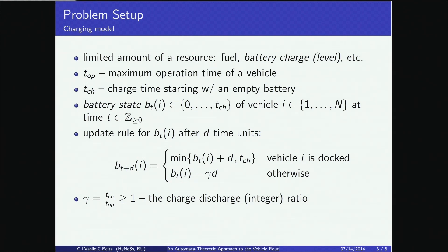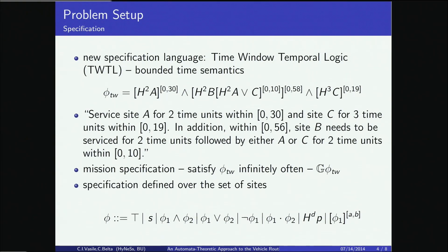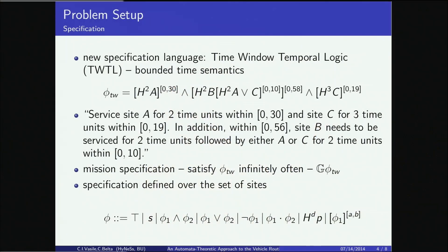We assume that robots have a limited amount of resource such as fuel or battery. We define the maximum operation time of a vehicle and the charging time starting with an empty battery. For all vehicles and all time, we define the battery state such that it is between zero and T_CH, with an update rule modeling charging and discharging. We also define a new specification language called Time Window Temporal Logic, TWTL for short, which has bounded time semantics, meaning that given a formula, we can state it must be satisfied before the maximum time.